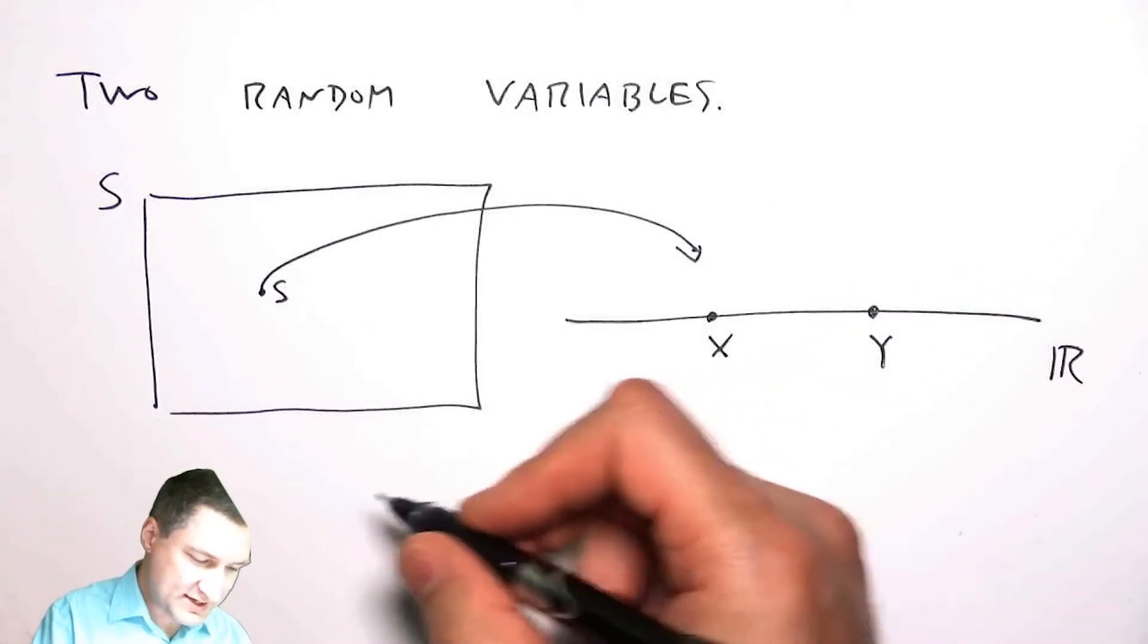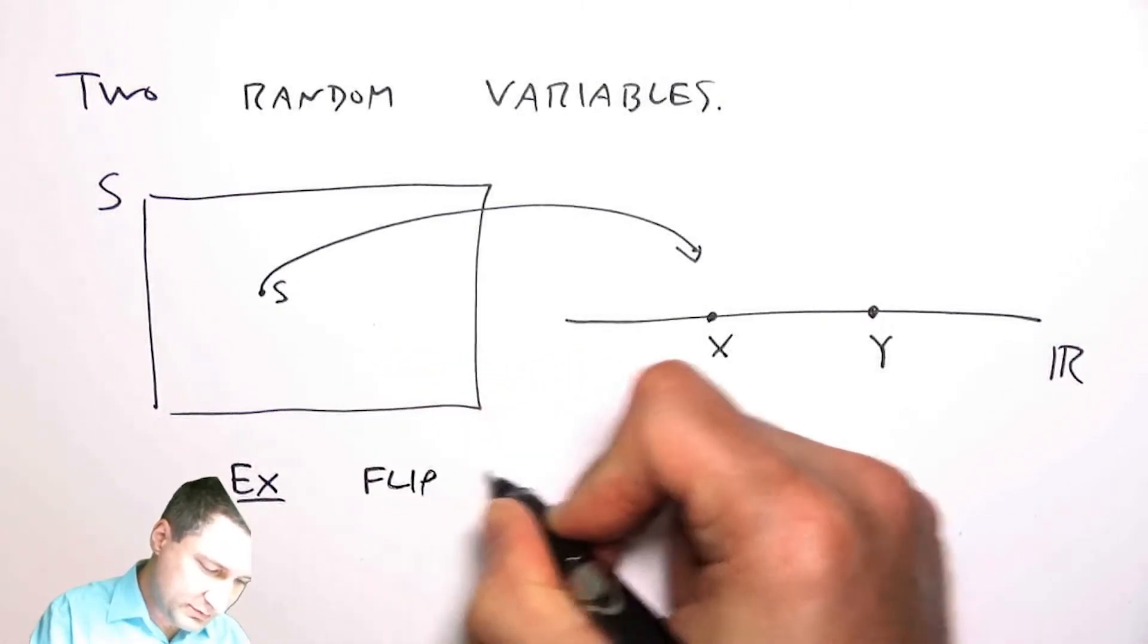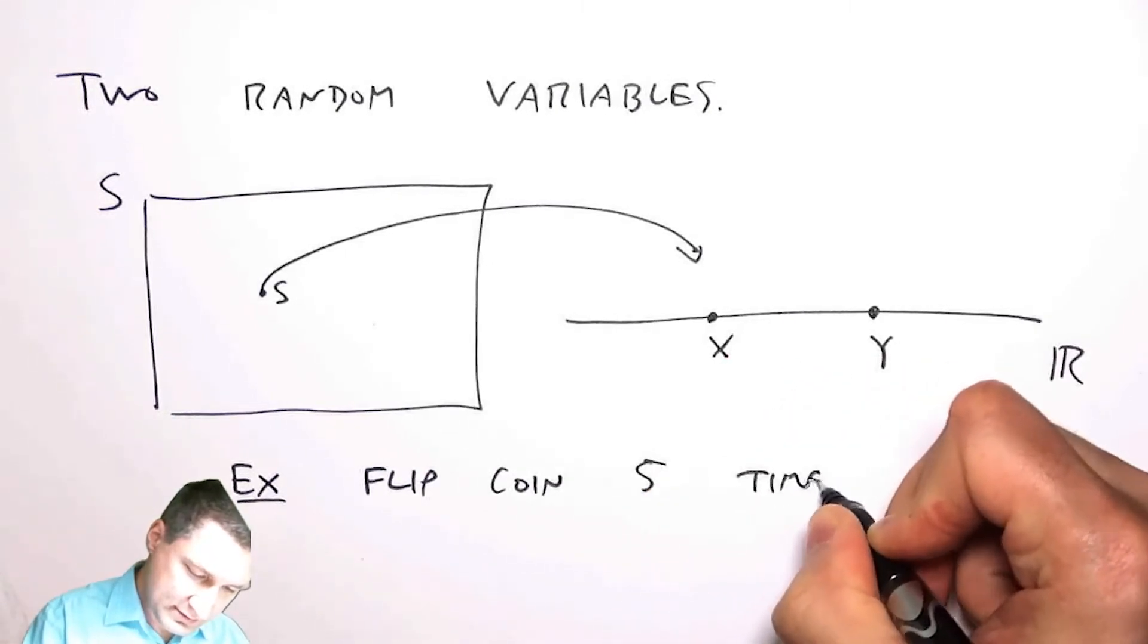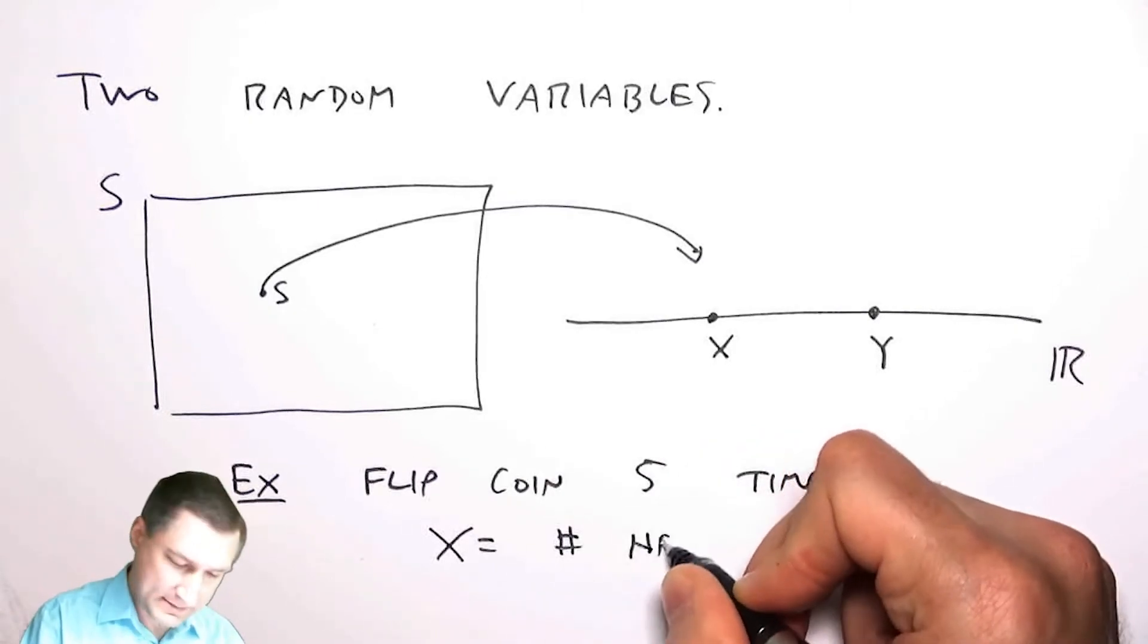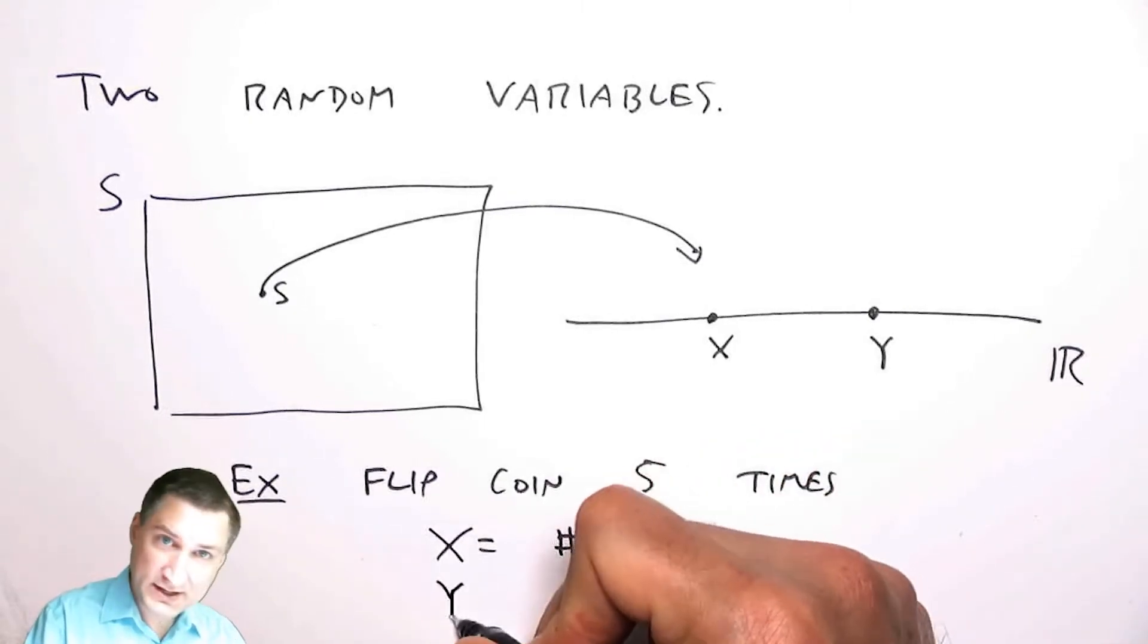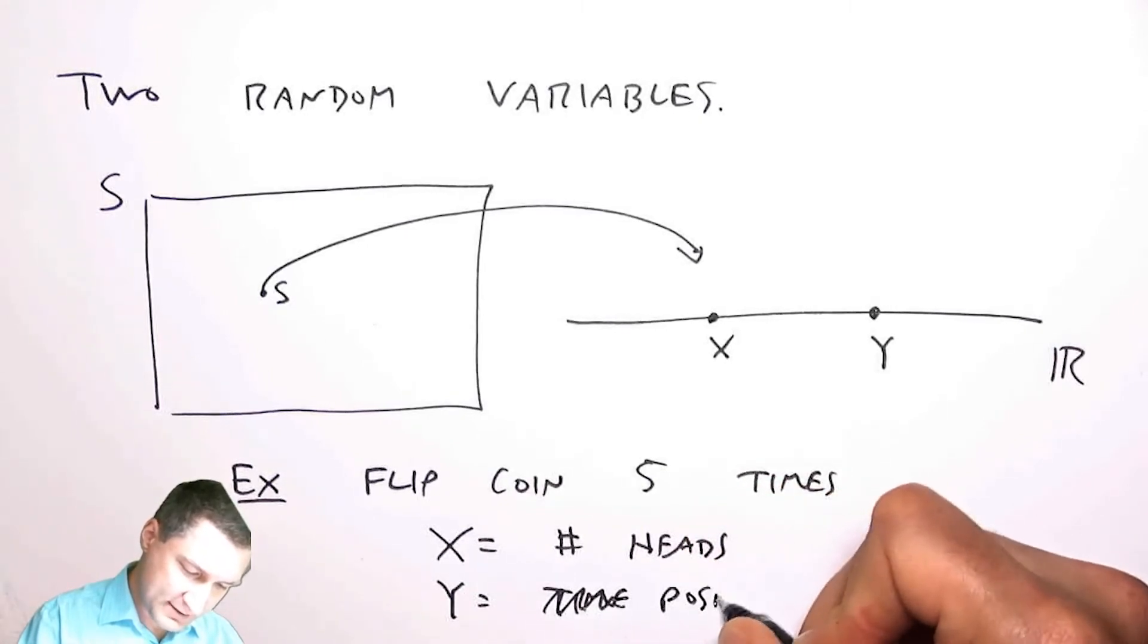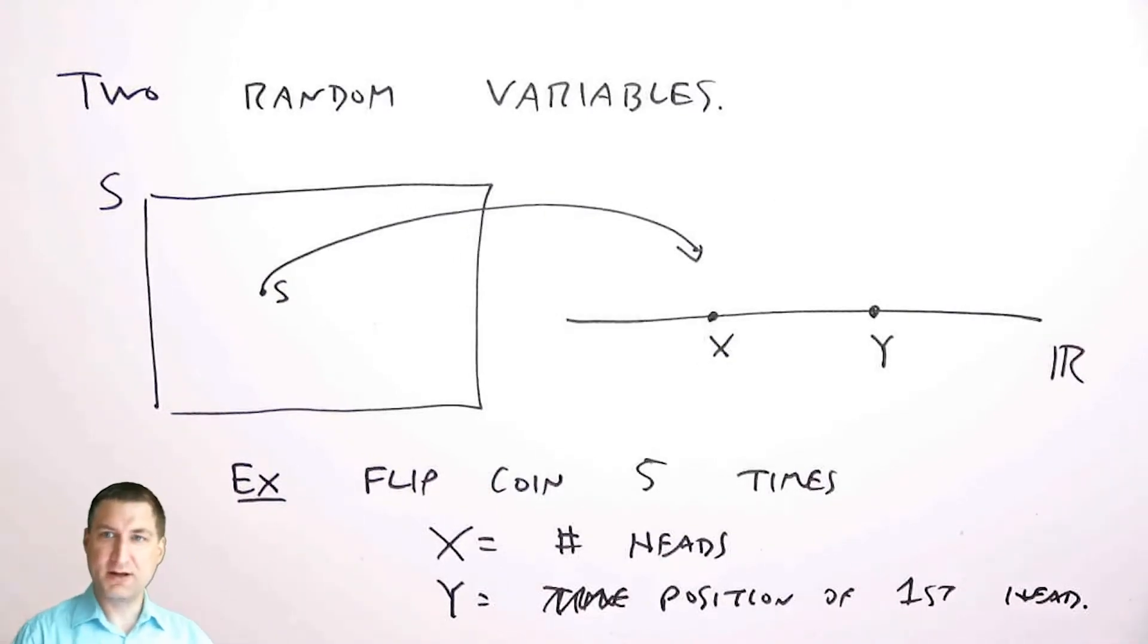For example, let's suppose that I flip a coin five times, and x equals the number of heads that I got, and y equals the position of the first head. So I'm doing an experiment and I'm deriving two numbers from that same experiment.